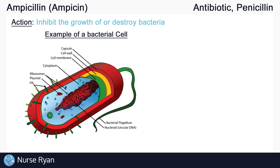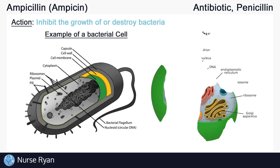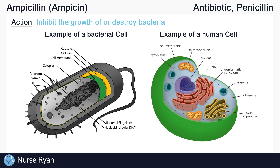Bacteria are single-celled or unicellular organisms that can cause disease, and often look something like this. As you can see, bacteria have cell walls and cell membranes. This makes them different from human cells, which only have cell membranes but lack cell walls.